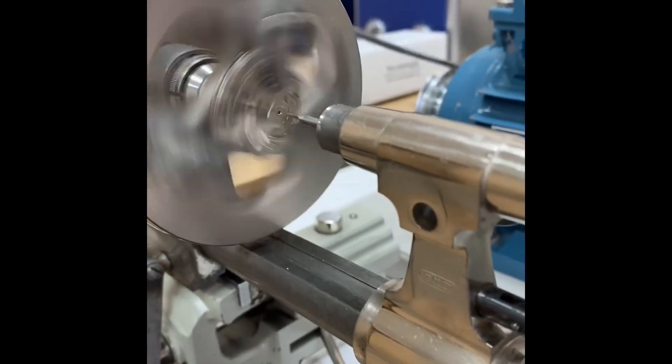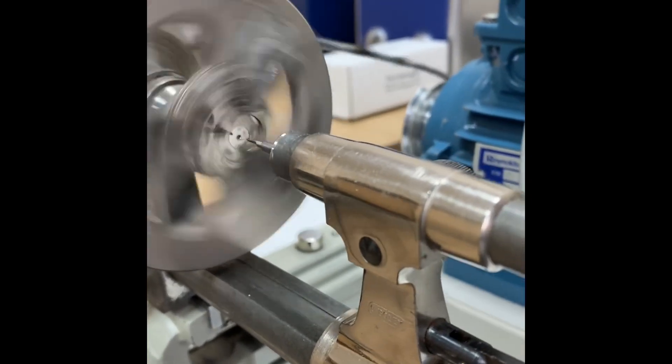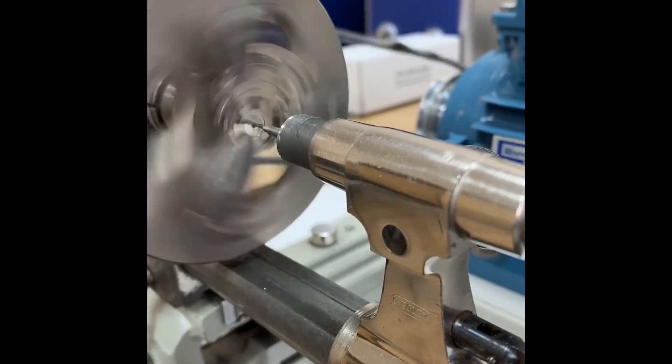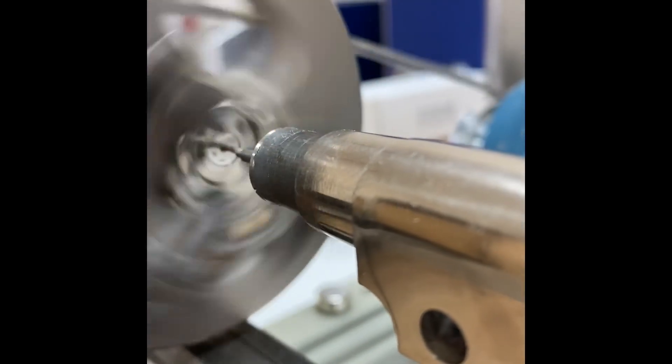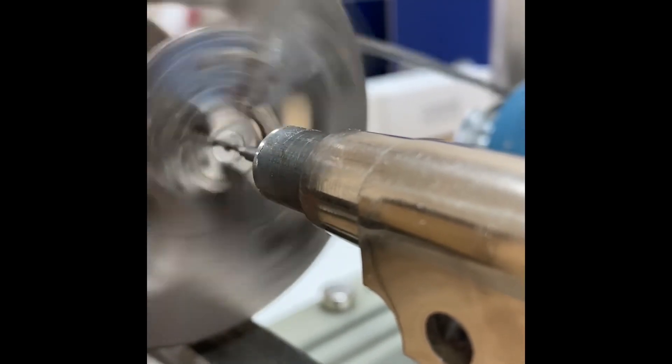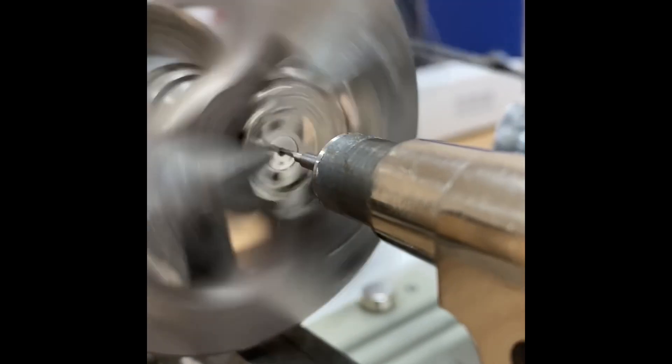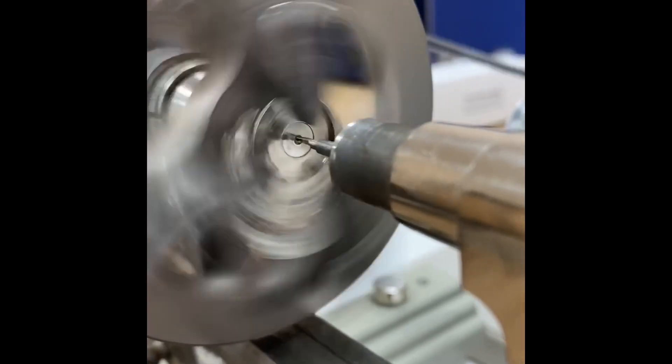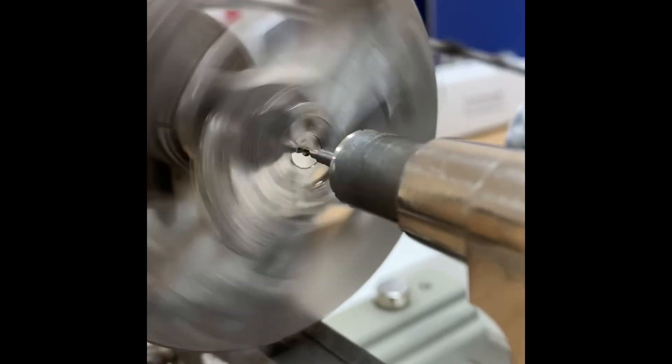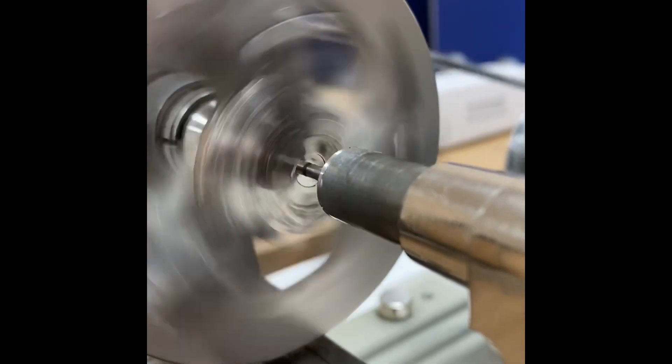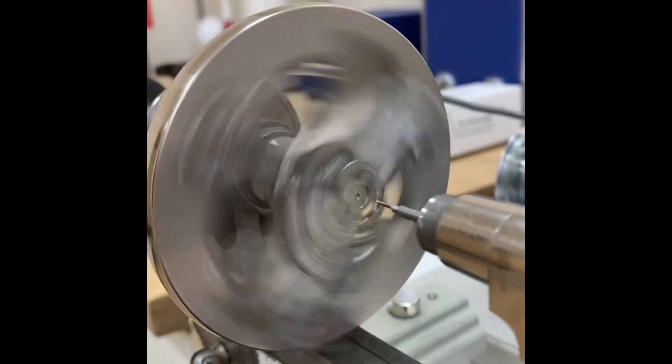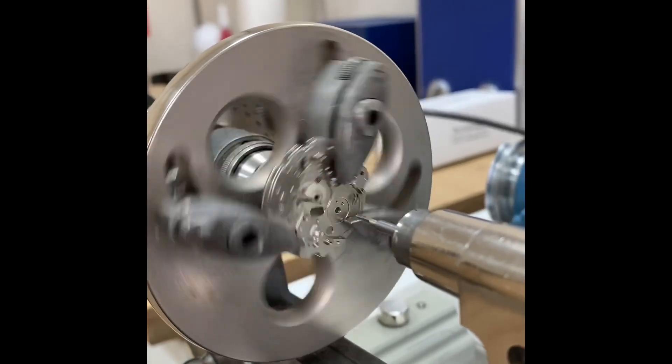So let's get the lathe started, and now we can slowly drill out our hole in the plate. We can see once we're through, we go through a couple more times to make sure that our hole is exactly where we need it to be. And we can stop.